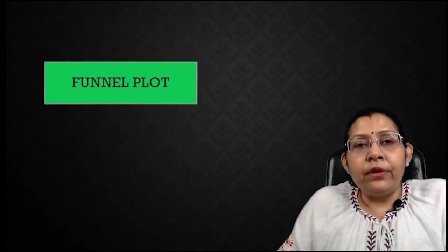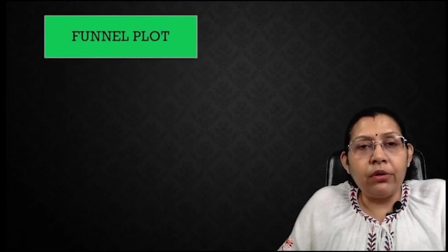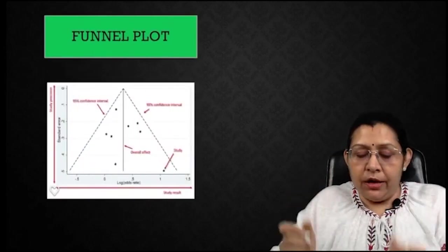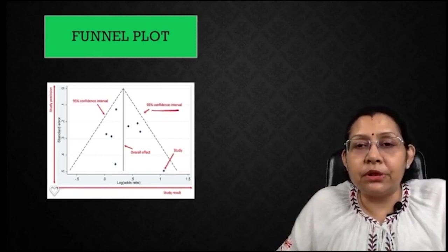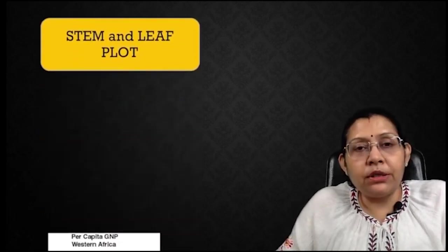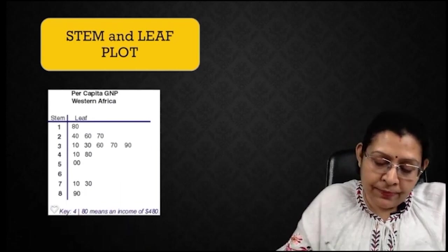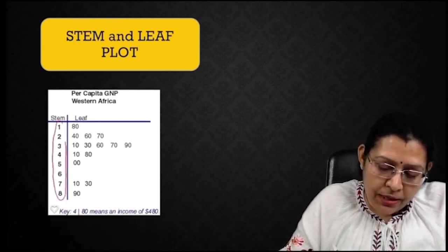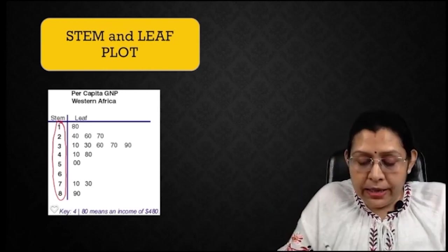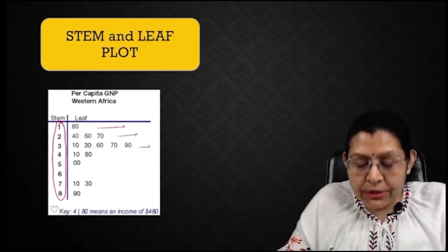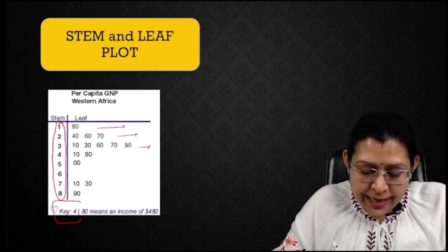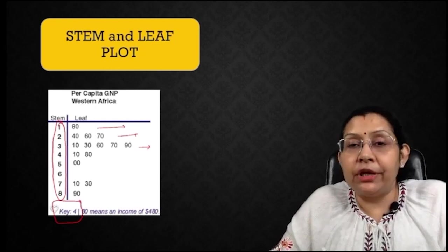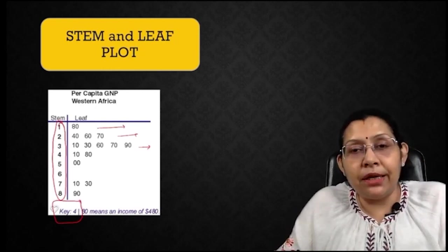We can also have a funnel plot, which looks like a funnel where the boundaries of the funnel correspond to 95% confidence interval values. We can also have a stem and leaf plot, which appears with a main branch like a stem and other branches like leaves. Always remember that in the stem and leaf plot a key is given at the end which helps in interpretation.